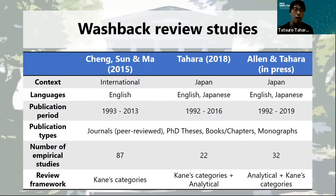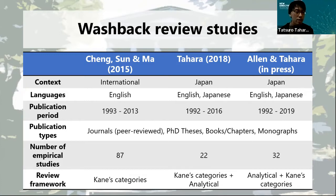There are some differences among the three studies. Cheng et al. reviewed international databases, whereas the other two focus on the Japanese context, and studies are written both in English and Japanese. Also, Cheng et al. adopted the research framework of Kane's categories, while Tahara and Allen added an analytical framework of their own.